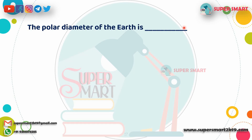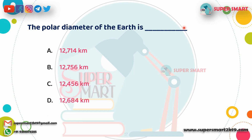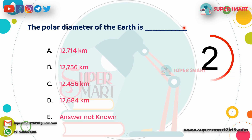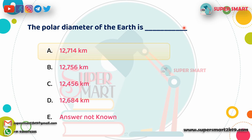Next question: What is the Earth's polar diameter? The Earth's polar diameter is 12,714 km.